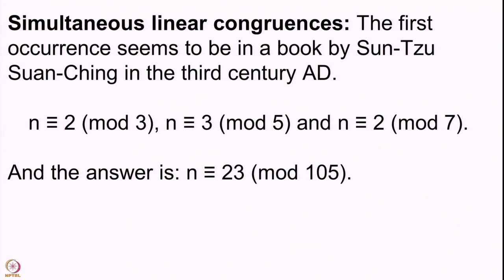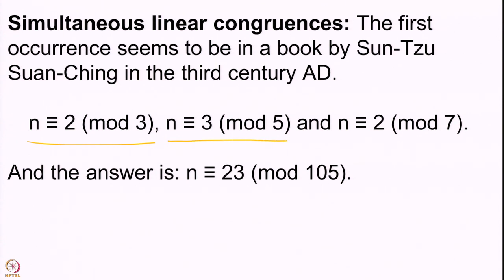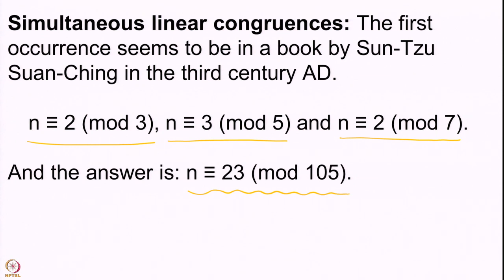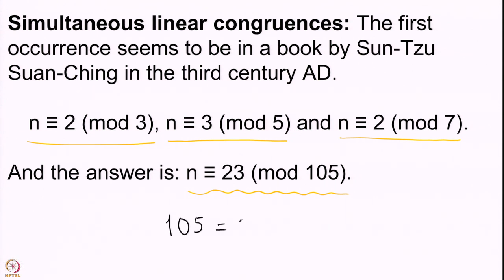As we can read here, it is in a book by Sun Tzu Shon Xing, and the problem translates mathematically as asking for a natural number n which is congruent to 2 mod 3 — when you take out groups of 3 what is left is 2 — it is 3 mod 5, and finally it is 2 mod 7. We solved this in the last lecture and observed that the solution is 23; you can add 105 to get 128 as another solution. The number 105 is the product of these three moduli: 3 × 5 × 7.